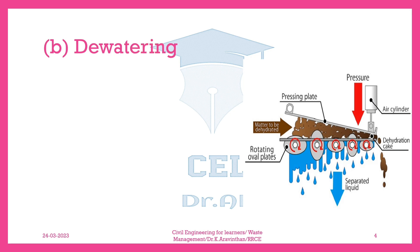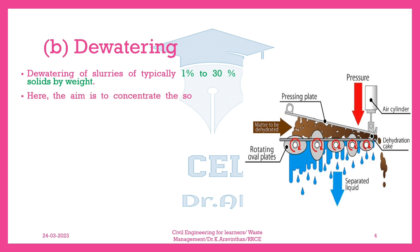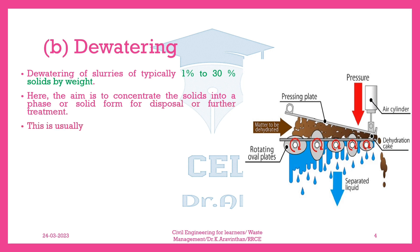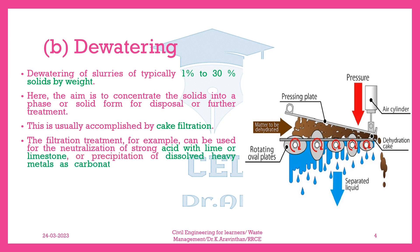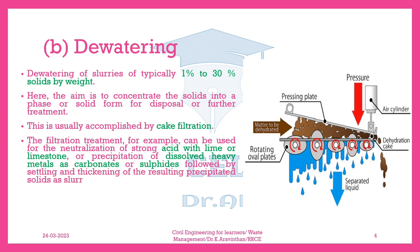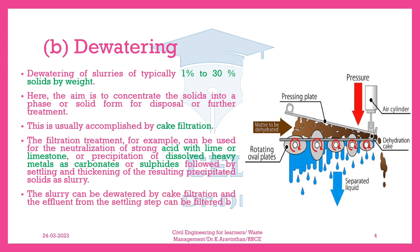B. Dewatering of slurries of typically 1% to 30% solids by weight. Here, the aim is to concentrate the solids into a phase or solid form for disposal or further treatment. This is usually accomplished by cake filtration. For example, filtration can be used for the neutralization of strong acid with lime or limestone, or precipitation of dissolved heavy metals as carbonates or sulfides, followed by settling and thickening of the resulting precipitated solids as slurry. The slurry can be dewatered by cake filtration and the effluent from the settling step can be filtered by depth filtration prior to discharge.